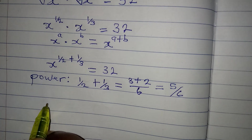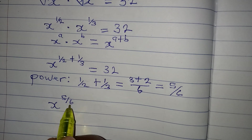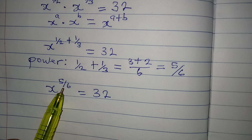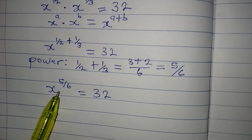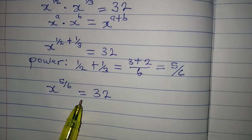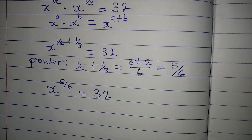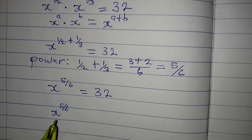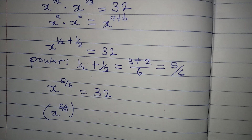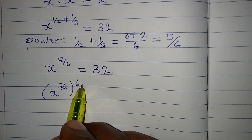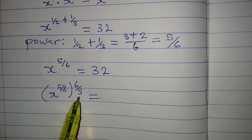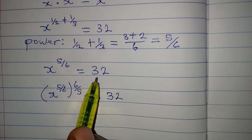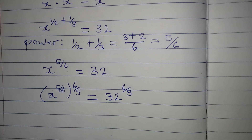From here we have x to the power of 5 over 6 equal to 32. The next question is how do we eliminate this power? We must get x alone. To eliminate this power we multiply the power by its reciprocal, which is 6 over 5. This reciprocal must also be applied to the right-hand side, so we will have 32 to the power of 6 over 5.